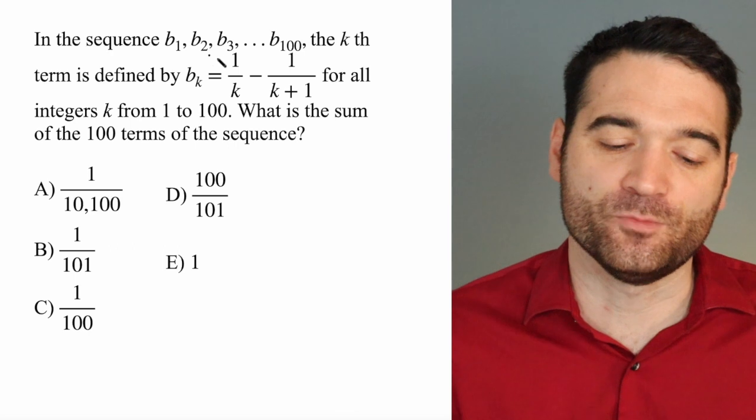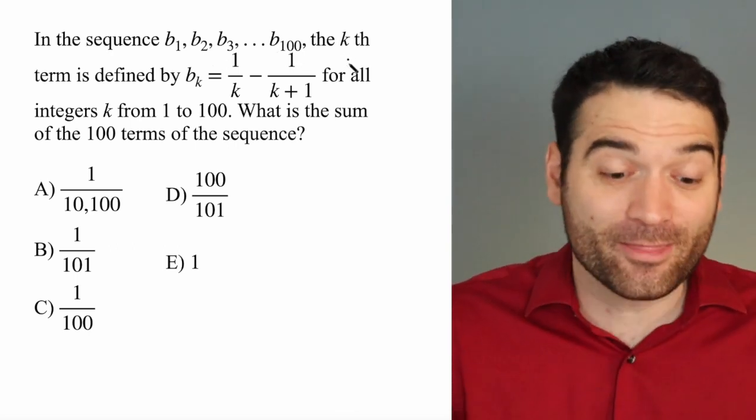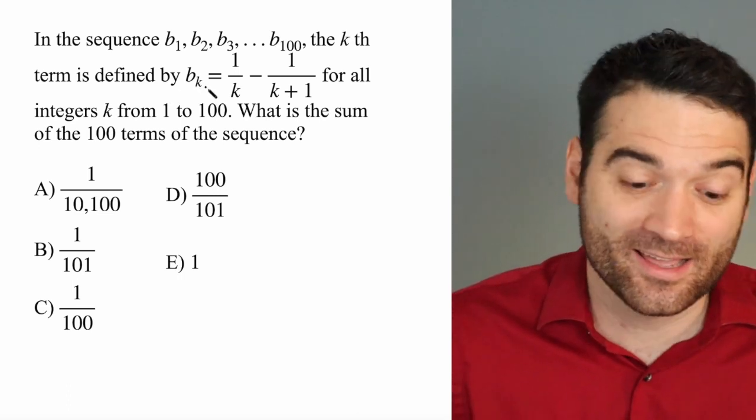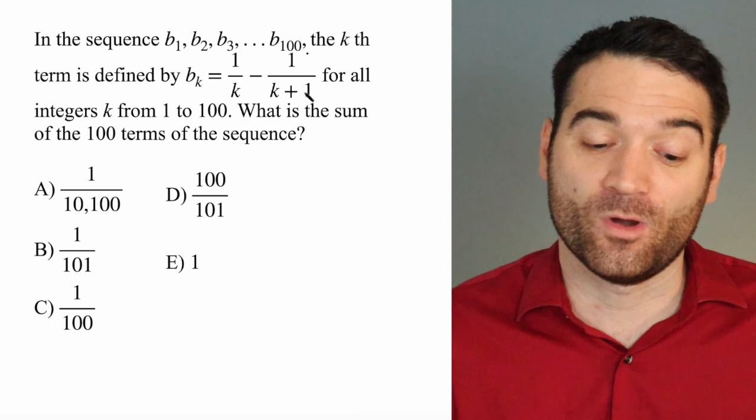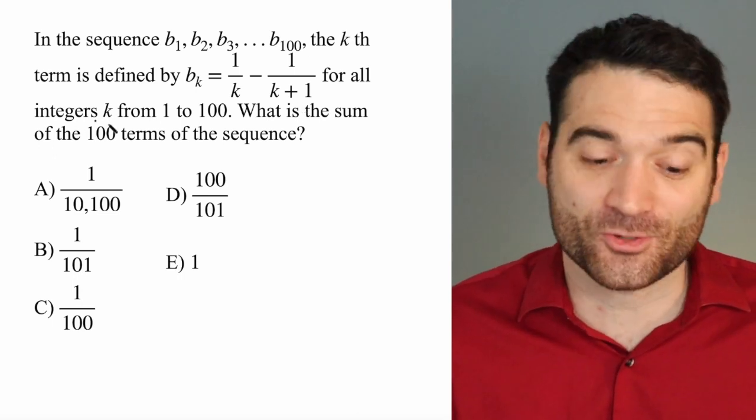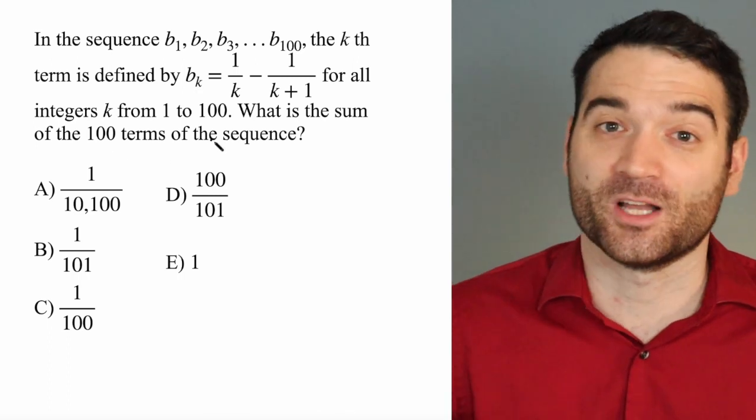In the sequence B1, B2, B3, dot dot dot, B100, the k-th term is defined by B sub k equals 1 over k minus 1 over k plus 1 for all integers k from 1 to 100. What is the sum of the 100 terms of the sequence?